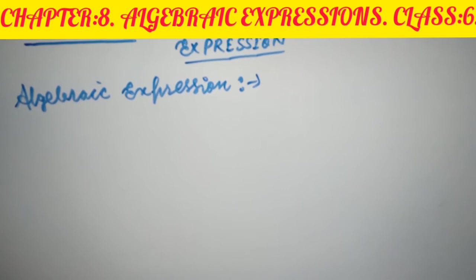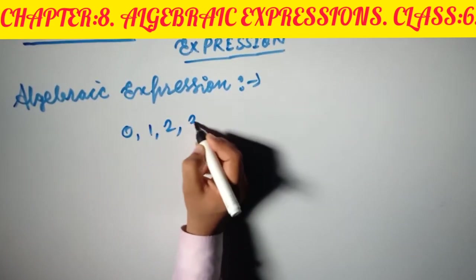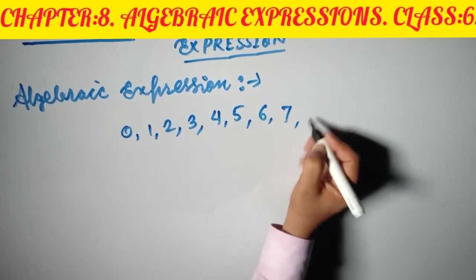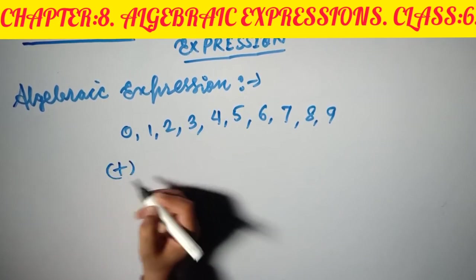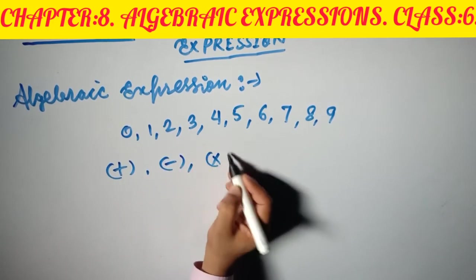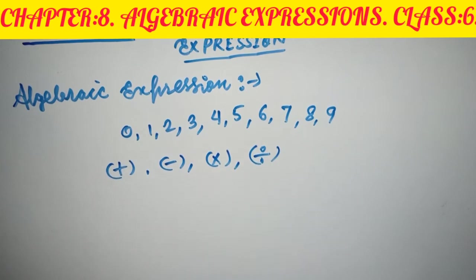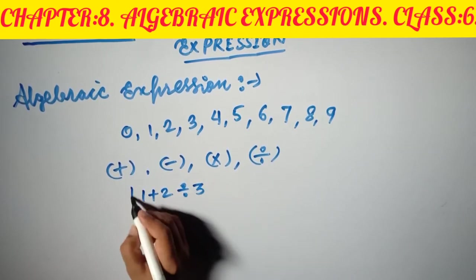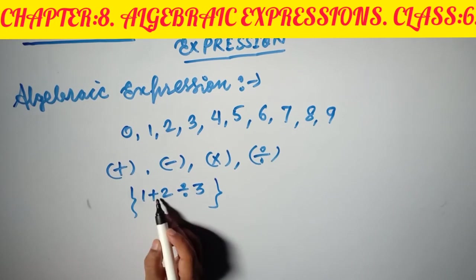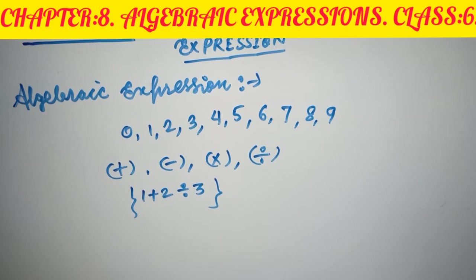For introduction, you know about symbolic numbers like 0, 1, 2, 3, 4, 5, 6, 7, 8, and 9. These are the symbols — these are the digits or numbers. If we use fundamental operations like addition, subtraction, multiplication, and division with these symbols, for example 1 plus 2 or divided by 3, these are symbolic expressions.